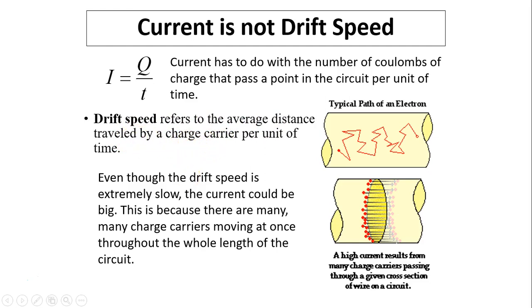Even though the drift speed is actually very, very slow—this is a typical path of an electron because the electron has a lot of obstacles when it goes through wire—so it comes, it bounces back, collides with something, then goes forward, then bounces back, goes forward. It's very, very slow, but current can be really, really big because there are a lot of charges doing the same thing.